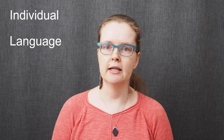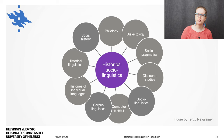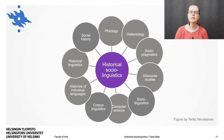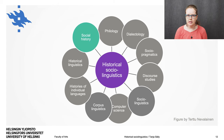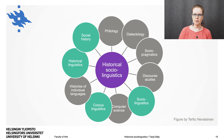More generally, historical social linguistics is concerned with relationships between the individual, language, and society in the past. As you might imagine, it's an inherently multidisciplinary subfield of linguistics. In addition to fields like social history and corpus linguistics, it's related to historical linguistics and sociolinguistics, among others.